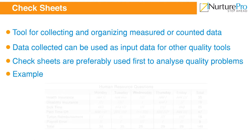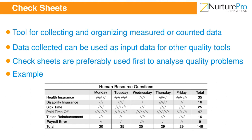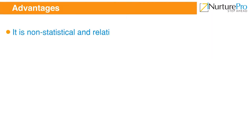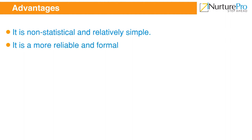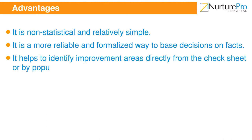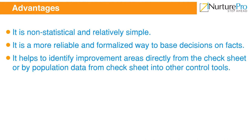For example, an HR department may use check sheets to track the category of questions asked from employees per day. This information helps the HR department identify improvement opportunities. The advantages of a check sheet are: it is non-statistical and relatively simple; it is a more reliable and formalized way to base decisions on facts; and it helps to identify improvement areas directly from the check sheet or by populating data into other control tools.